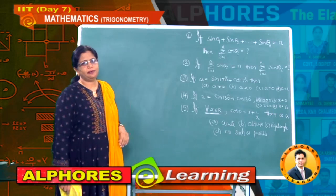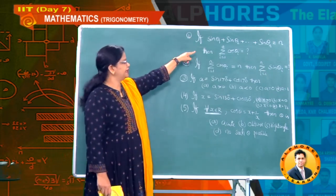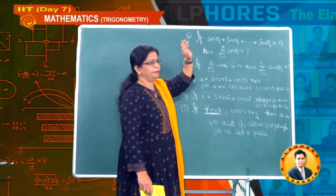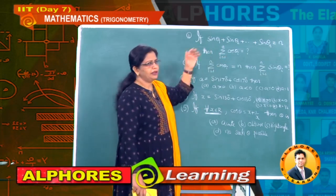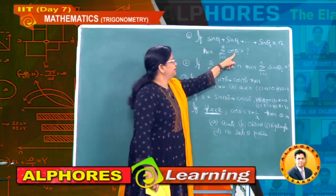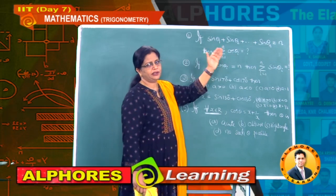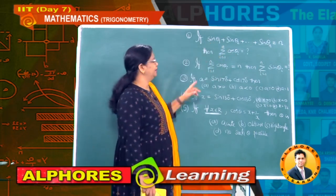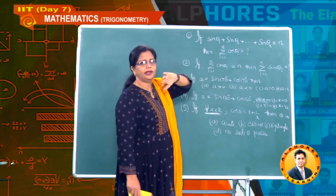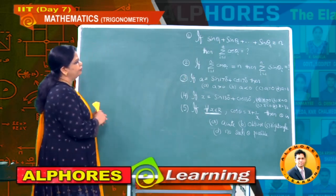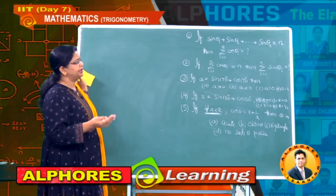Now let us do some problems based on domain and range. Let us check these 5 problems and solve them one by one. The first problem: n angles are given — sin theta 1 plus sin theta 2 and so on equals n. They ask about sigma cos theta_i for i from 1 to n. The problem does not mention whether theta is positive, negative, acute, obtuse, or right angle — nothing is given.